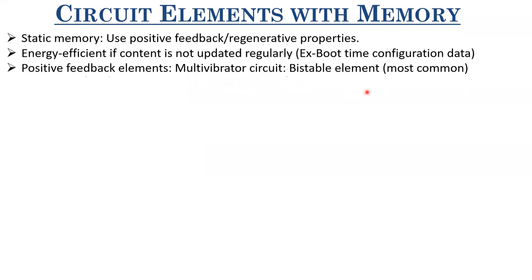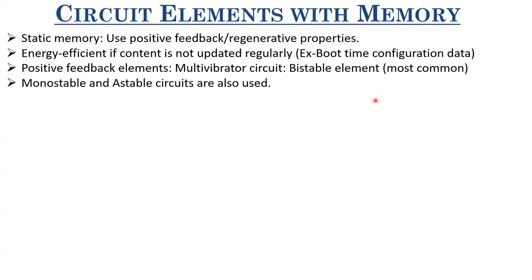A bistable element, as the name suggests, consists of two stable states, which can be classified as logic level zero or logic level one, used to store one bit. It can have several metastable states, but only two stable states. Apart from this, we also have monostable and astable circuits, which are used for different purposes, like ring oscillators, and I will be discussing about these two elements towards the end of this module.